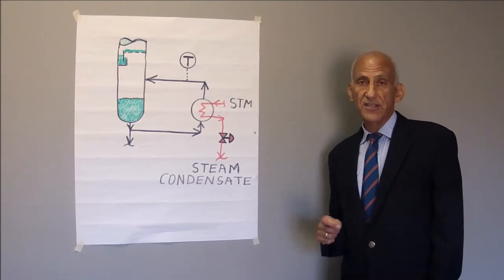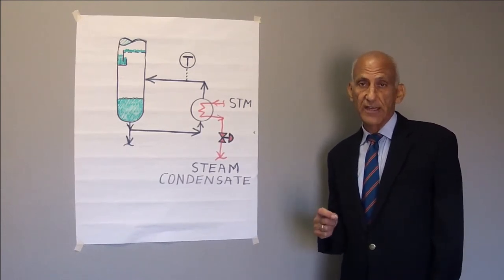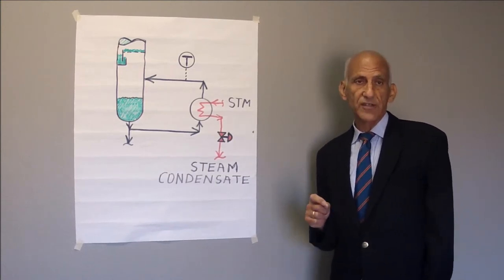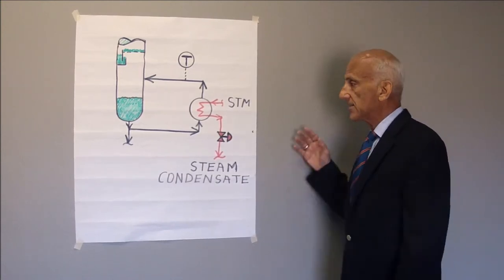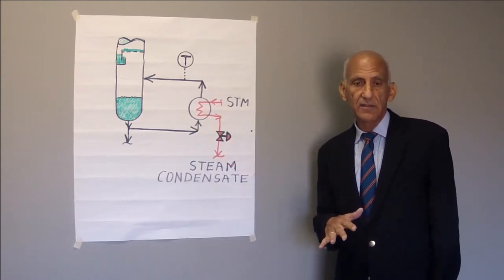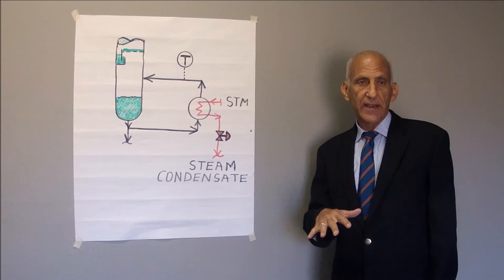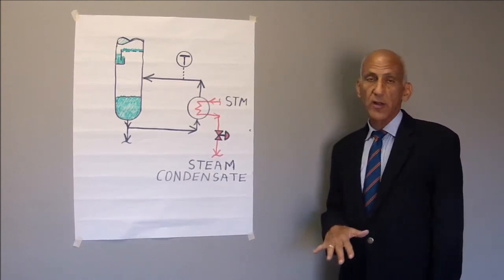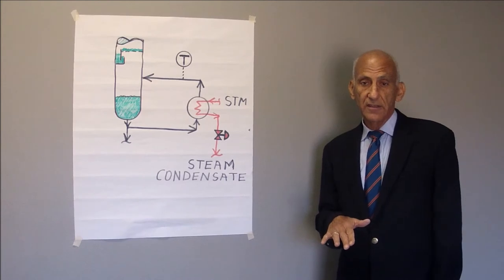And whereas high-velocity aids sensible heat transfer, apparently high-velocity retards latent heat transfer. And as the steam blows through tubes and blows the condensate seal out, the heat transfer rate is going to go down and the reboiler duty will go down.